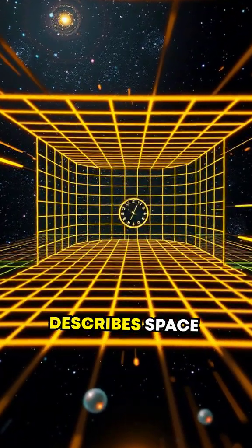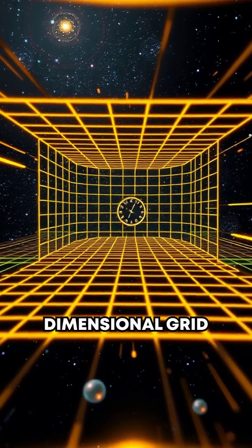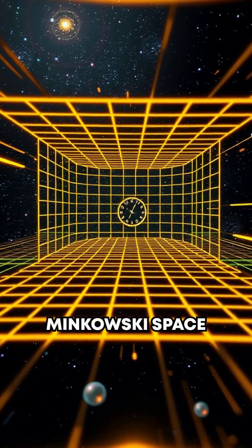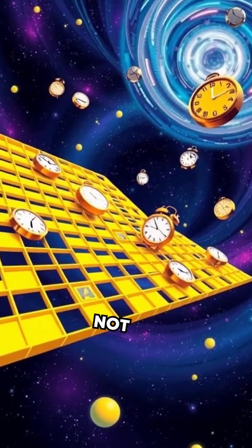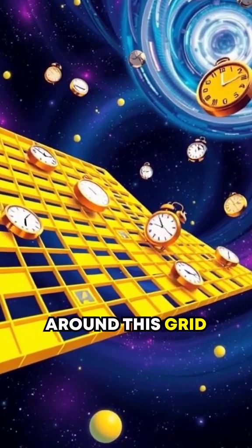Einstein describes space-time using a four-dimensional grid, known as Minkowski space-time. If you're not accelerating, you can move around this grid as you please.